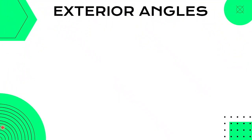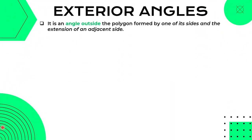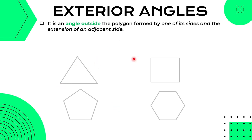Now let's talk about exterior angles. From the word exterior, it is an angle outside of the polygon. It is formed by one of its sides and the extension of an adjacent side. From this figure, we can form an exterior angle out of one of the sides of the polygon and the extension of an adjacent side — pag sinabing adjacent, katabi niya din, but we need to extend that side to form this angle.